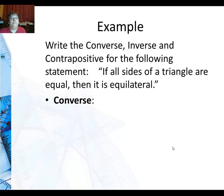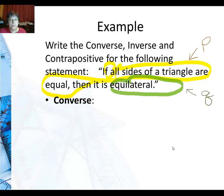So let's go to an example. We're going to write the converse, the inverse, and the contrapositive for the following statement: If all sides of a triangle are equal then it is equilateral. So the converse is going to take the P and the Q. At first I'm identifying my original P and Q. My original hypothesis is all sides of a triangle are equal. My original conclusion is that it is equilateral. There's my P, there's my Q.